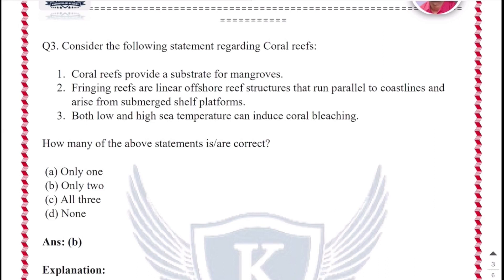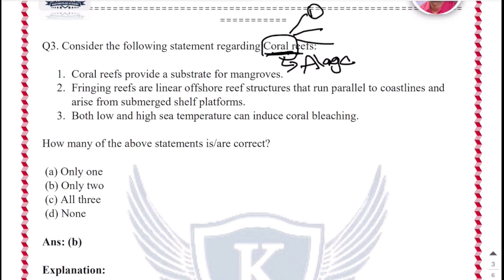Question 3: Consider the following statements regarding coral reefs. Before going into the statements, let us know what a coral reef is. Corals have a symbiotic association with an algae called zooxanthellae, which lives on the coral. These corals are of three types: the first is called fringing reef, the second is called barrier reef, and the third is called atoll reef.